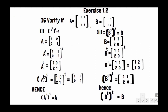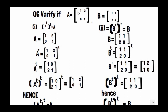Exercise 1.2, Question 6: Verify that (A^T)^T = A, where A = [1, 2; 0, 1]. First, find A transpose by converting rows to columns. A^T equals [1, 0; 2, 1].